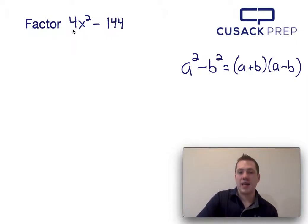Now in order to do that, I recognize that 4x squared is in the same position as a squared, and 144 is in the same position as b squared. So that would mean that the square root of 4x squared would tell me what a is, which would be 2x,